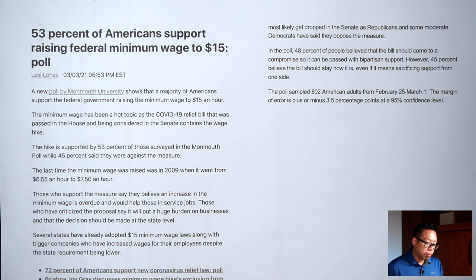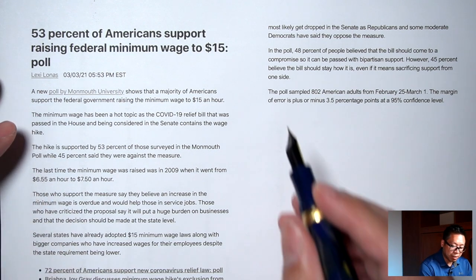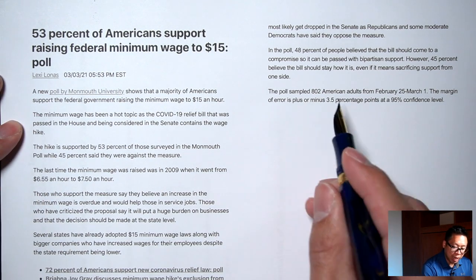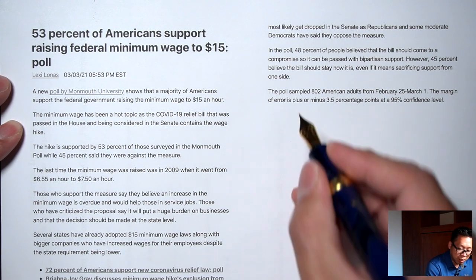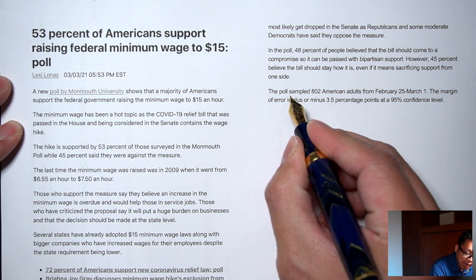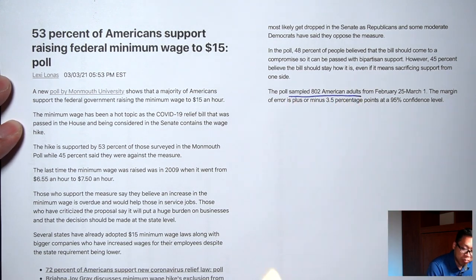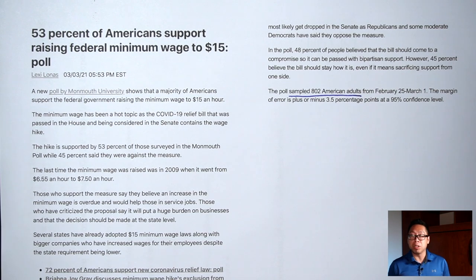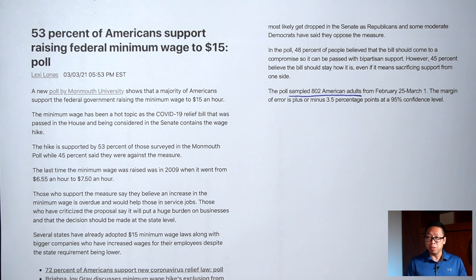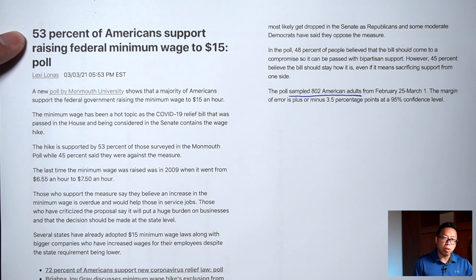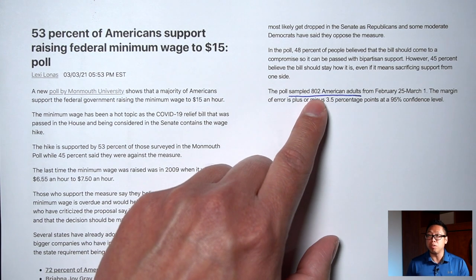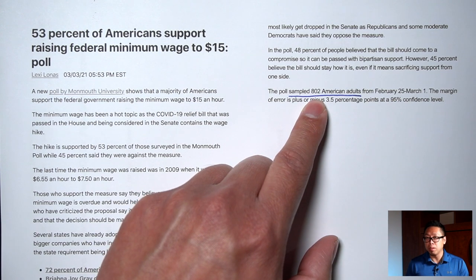If we skim all the way to the end, it does say that the poll sampled 802 American adults. So they asked only 802 people, which is a really small number compared to all Americans — millions and millions of people. So how are they able to say 53% of all Americans from just asking 802 people? That's one of the questions we're going to answer today.